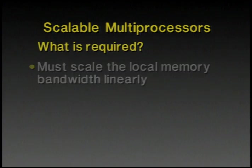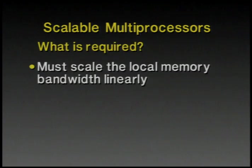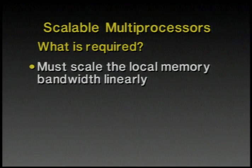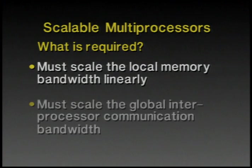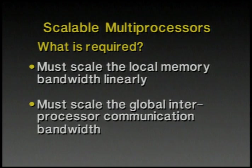What's required to build a scalable multiprocessor? We must scale both bandwidth and deal with the scaling of latency. Focusing on bandwidth: we have to be able to scale the local memory bandwidth that each processor demands linearly, and we also have to have a way to scale the communication bandwidth between processors as we scale the size of the machine.